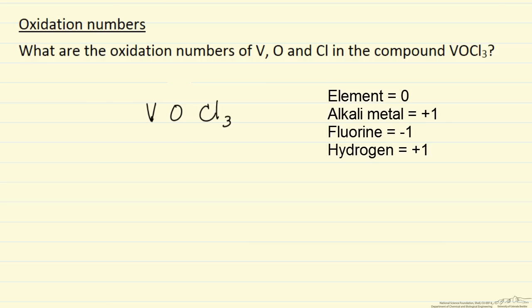For example, an element alone has an oxidation number of zero, an alkali metal has an oxidation number of plus one, fluorine has an oxidation number of minus one, and hydrogen has an oxidation number of plus one.